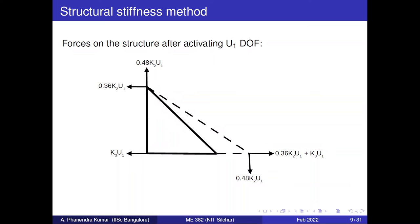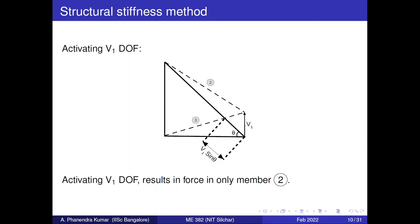Now let us see what happens when we lock all degrees of freedom and activate the v1 degree of freedom. How will activating v1 result in forces, and in which members? Is it the same members 2 and 3, or only one? Whether v1 also produces forces in both members or just one — let us look into it now.